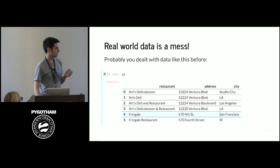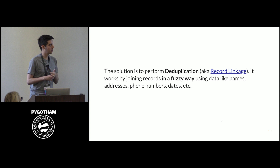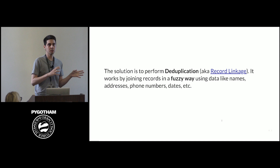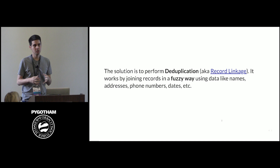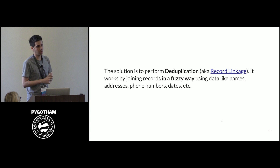It's quite difficult to build a general algorithm to handle that. But there's a whole area of study called deduplication, also known as record linkage. It works by joining records in a fuzzy way, using data like names, addresses, phone numbers, and dates to join records. We don't have unique identifiers here. If we had unique identifiers, we could simply join by them and do a database join or a manual algorithm join to solve our deduplication project. But since we don't, we have to use this kind of data to figure out duplicates.